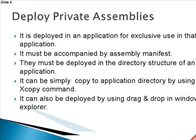Deployment of a private assembly is very simple. A private assembly is deployed in an application for the exclusive use of that application. Every private assembly is accompanied by a manifest — an assembly manifest. The manifest contains information about the assembly and its required assemblies. Private assemblies are installed in a folder containing the application executable file or one of its subfolders, and must be deployed in the directory structure of the containing application.